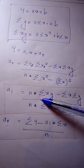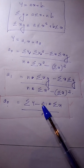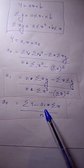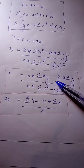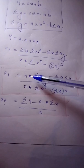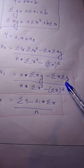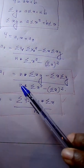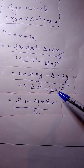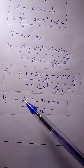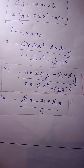We find a0 and a1 using normal equations. A1 is equal to n into sigma xy minus sigma x into sigma y, divided by n into sigma x square minus sigma x whole square. A0 is equal to sigma y minus a1 into sigma x, divided by n.